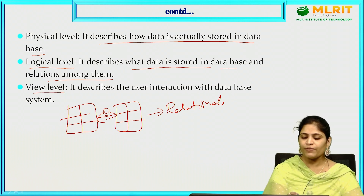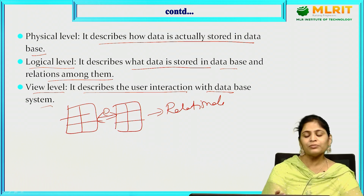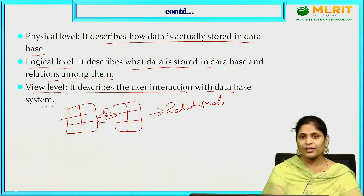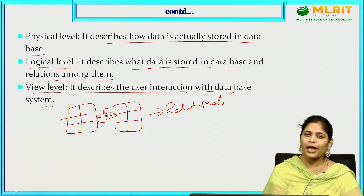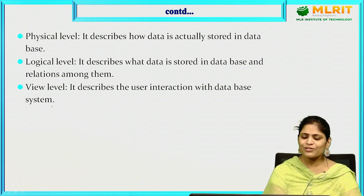What is the view level? View level describes the user interaction with the database. It deals with just the interaction with the database and does not deal with the implementation details. The user may not know how the database is implemented, what data structures are used, or how the data is stored — that is irrelevant to the user. That is what abstraction means. These are the three levels of abstraction.